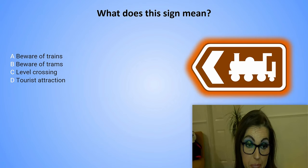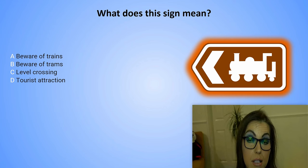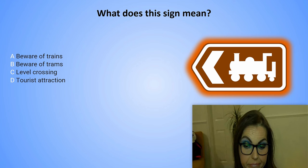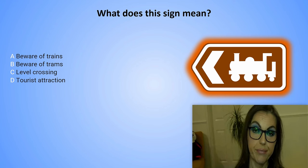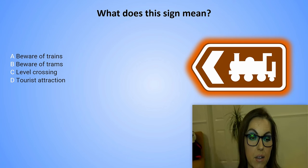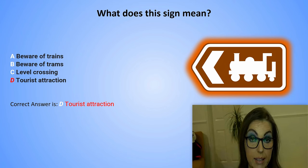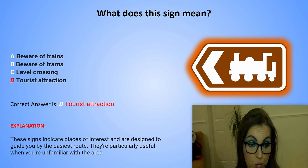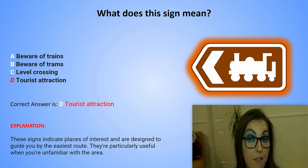What does this sign mean? A. Beware of trains. B. Beware of trams. C. Level crossing. Or D. Tourist attraction. The correct answer is D. Tourist attraction. Explanation: These signs indicate places of interest and are designed to guide you by the easiest route. They are particularly useful when you are unfamiliar with the area.